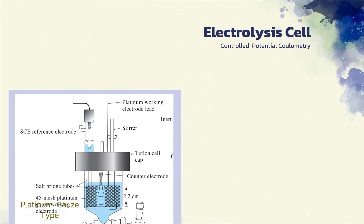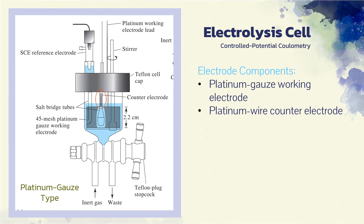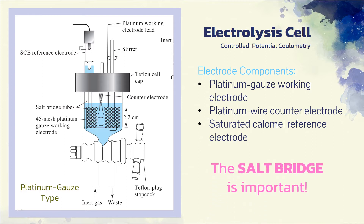The first figure consists of a platinum gauze working electrode, a platinum wire counter electrode, and a saturated calomel reference electrode. The counter electrode is separated from the analyte solution by a salt bridge that usually contains the same electrolyte as the solution being analyzed.